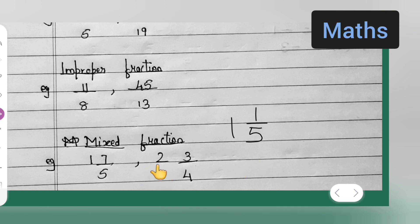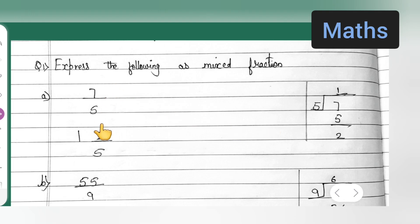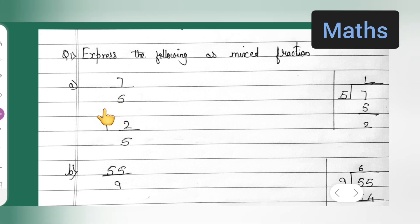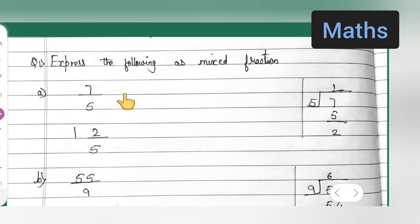So let us do now. 7 upon 5 is given. Now 7 upon 5 is improper fraction, right? So how we convert it into mixed fraction? Divide it. Like 5 ones are 5, 7 minus 5 will be 2, right? So 2 will remain.